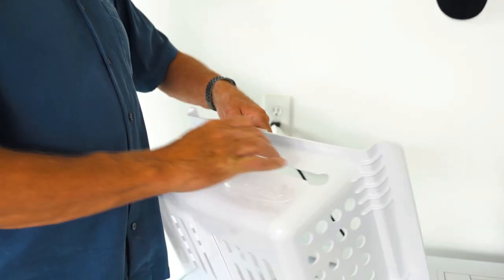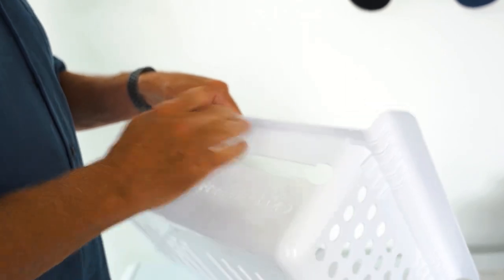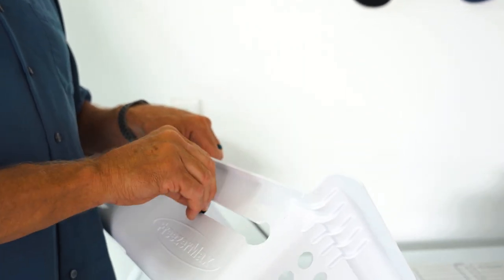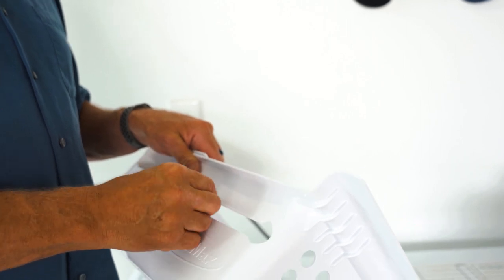So when you get your basket extended out to whatever length you need for your freezer, let's say on this one, it's almost all the way out. All you do is slip that basket lock in that slot right there.